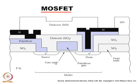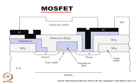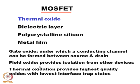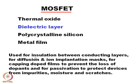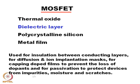The main function of the gate oxide is that under it a conducting channel is formed between the source and the drain. There is also a field oxide which provides isolation among the devices. Apart from gate oxide and field oxide, there can be a dielectric layer used for insulation between conducting layers, for diffusion and ion implantation masks, for capping doped films to prevent loss of dopants, and for passivation to protect devices from impurities, moisture, and scratches. In this diagram, the silicon nitride dielectric layer is deposited at the top throughout the devices to protect them.